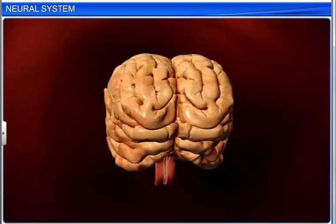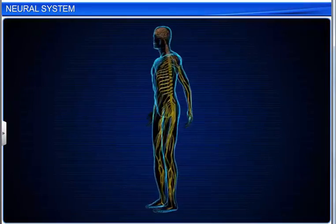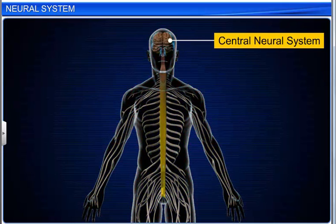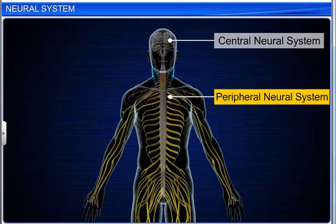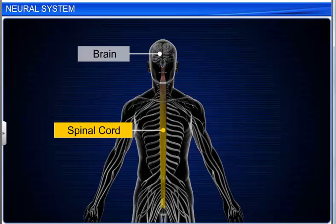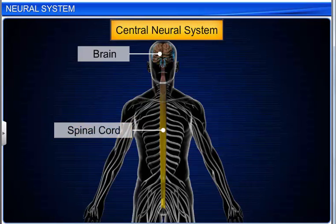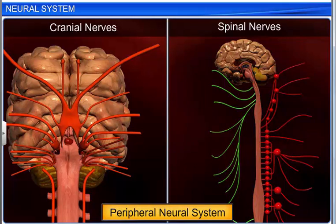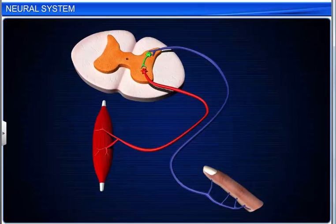The human neural system is divided into two parts: the central neural system, or CNS, and the peripheral neural system, or PNS. The brain and the spinal cord form the central neural system — it is the site of information processing and control. The peripheral neural system comprises cranial and spinal nerves and controls the voluntary functions of the body. The nerve fibers of peripheral nerves are of two types.